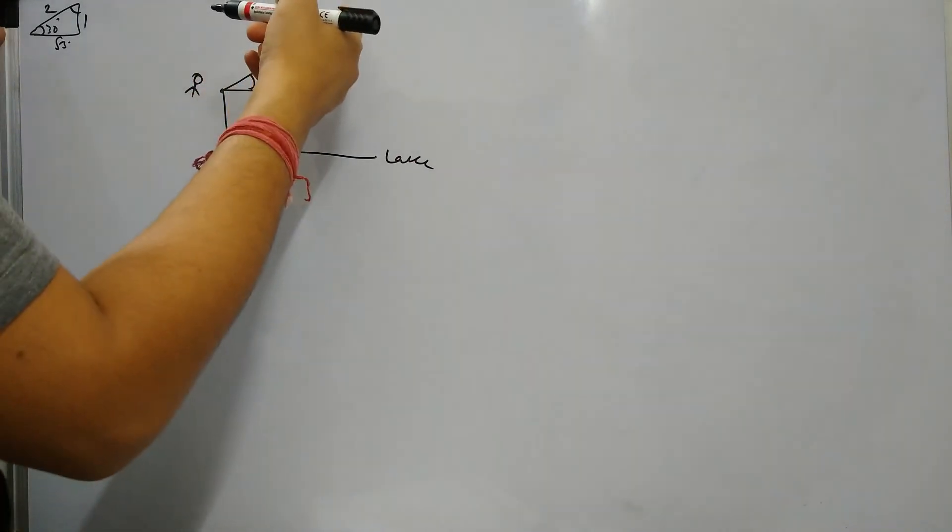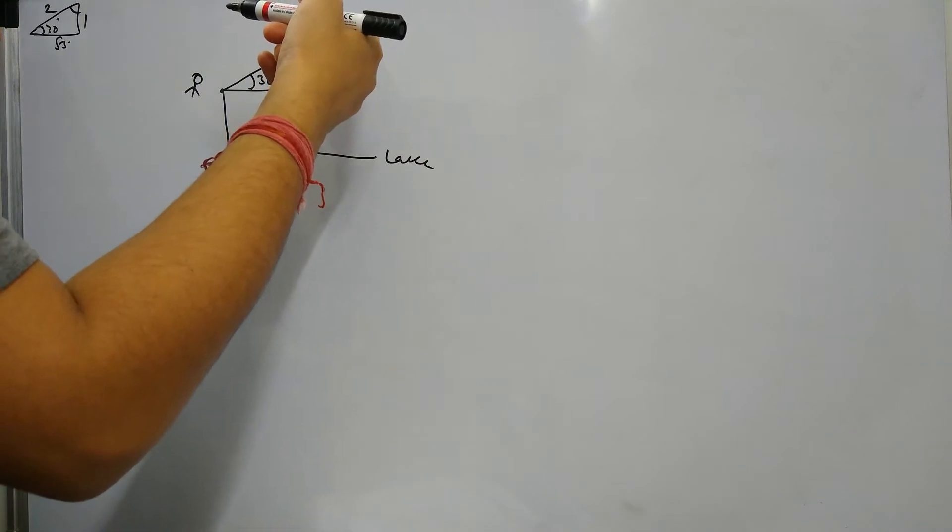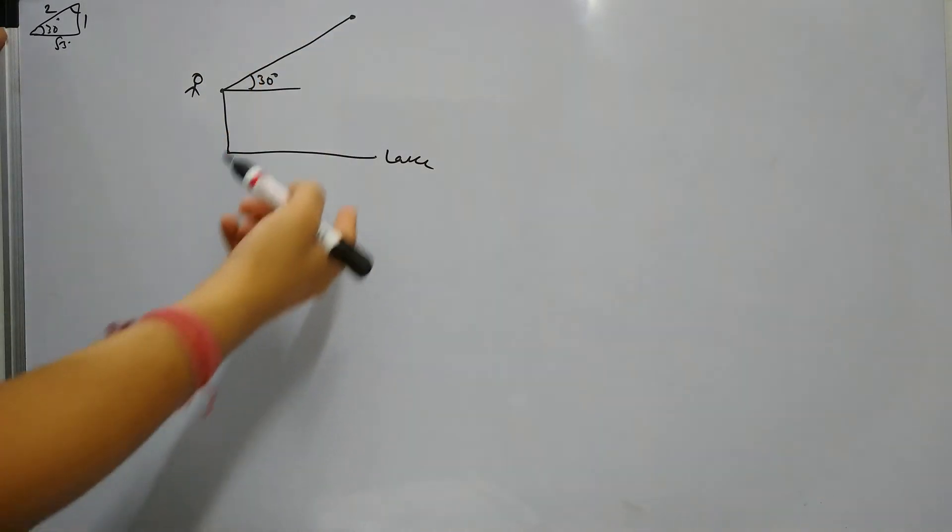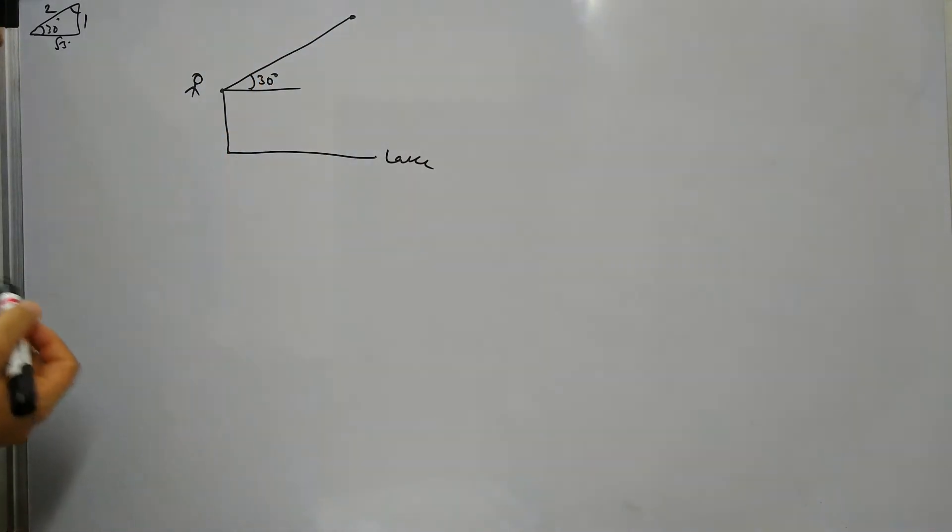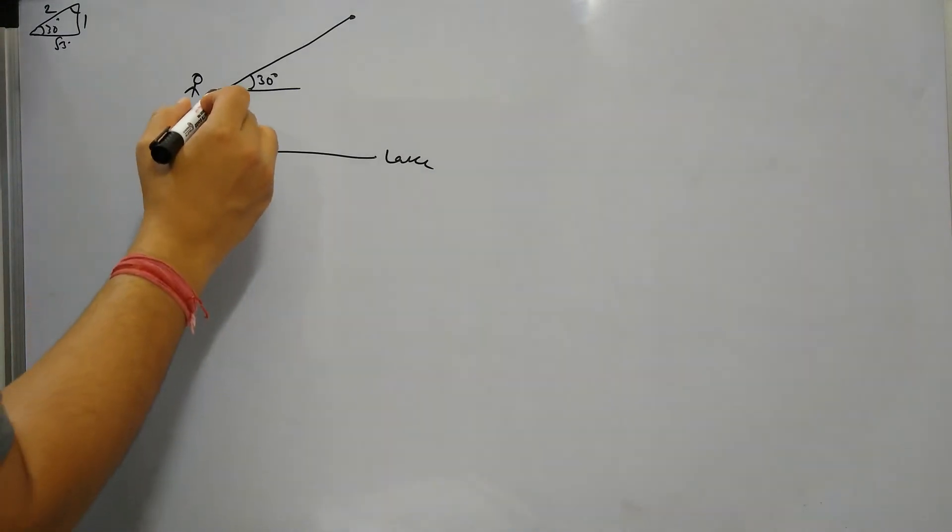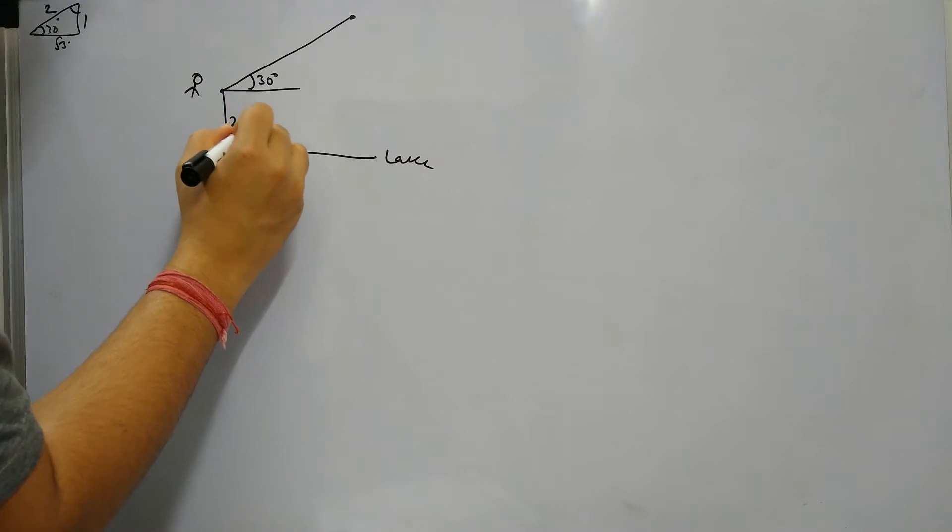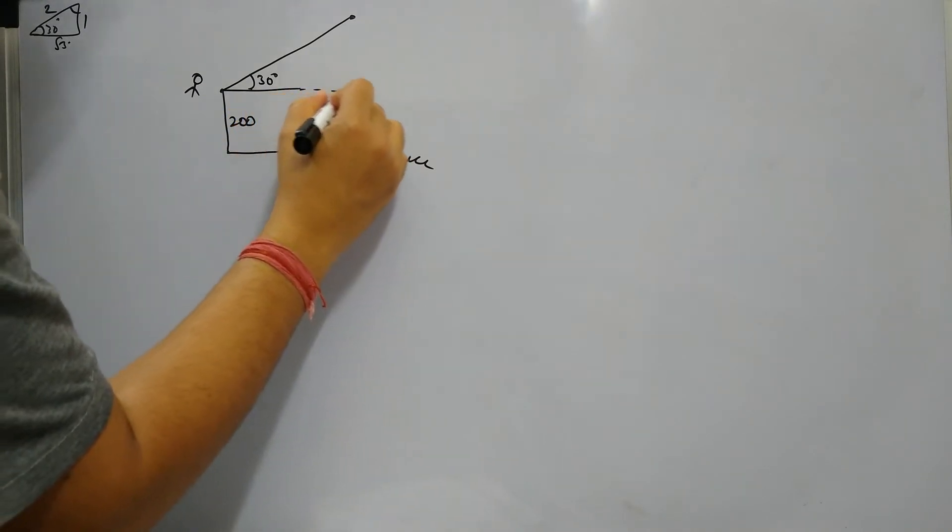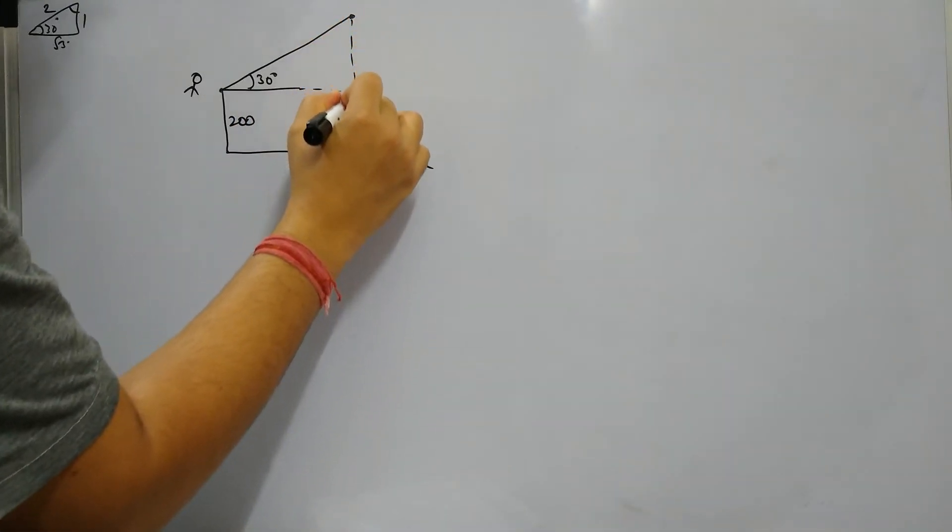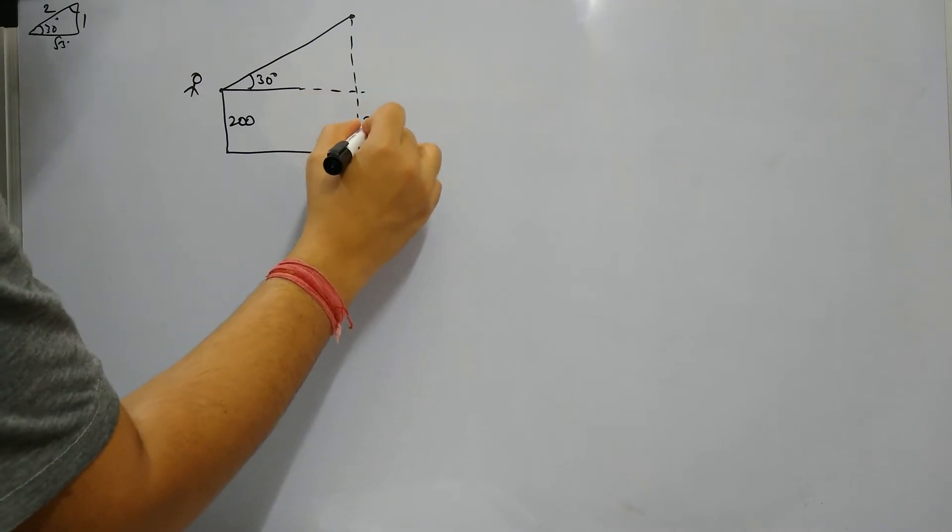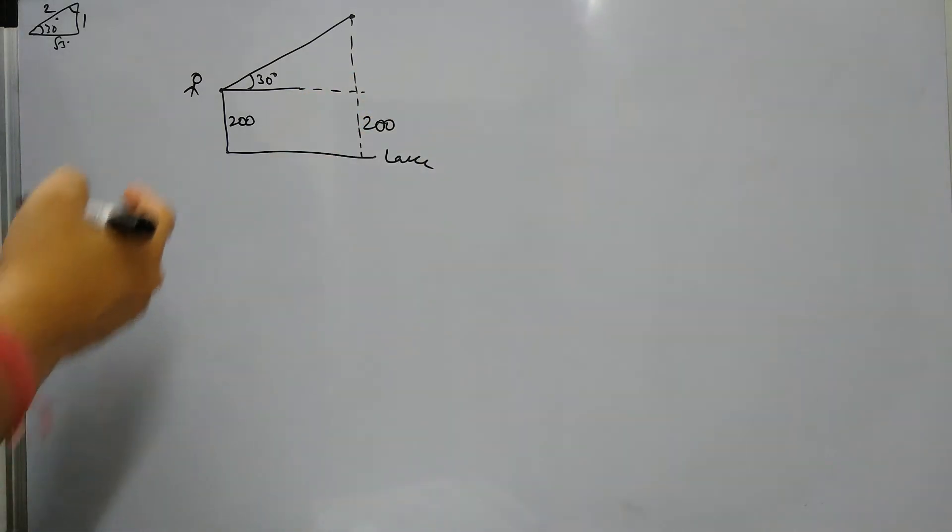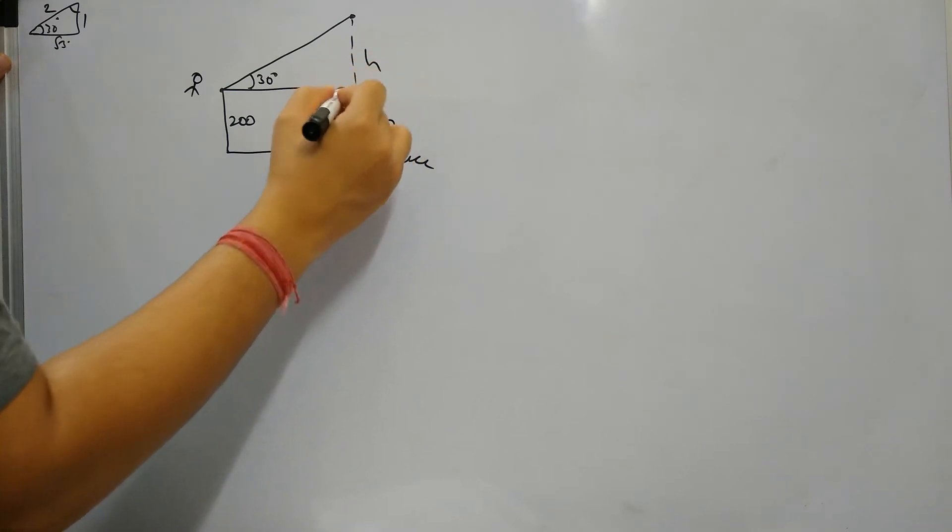And the angle of depression of the shadow of this cloud in the lake is 60 degrees. So if this height is 200 meters, then this height will also be 200 meters. Let's say the height of this cloud is h from this point.